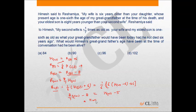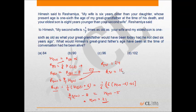This gives Hw as 21. Now I can put this value into the equation. This gives Rw equal to 24. And from this, RS will be 16. Putting it into the equation, you get the great grandfather's age plus 6 equals 96, which is what the question is asking. So the correct option is option C.